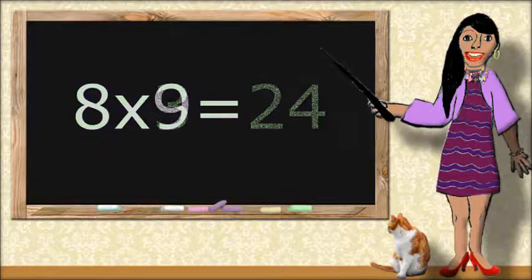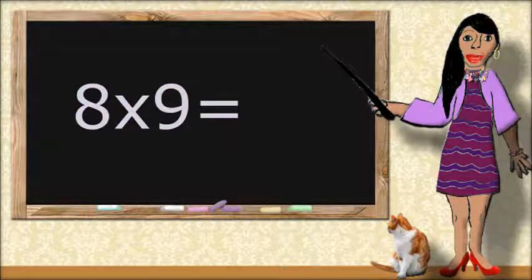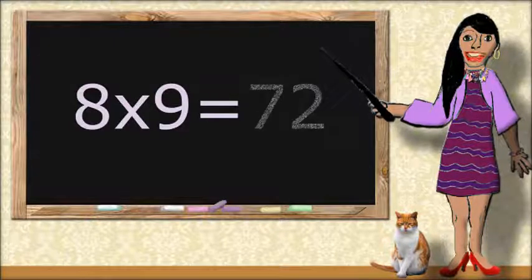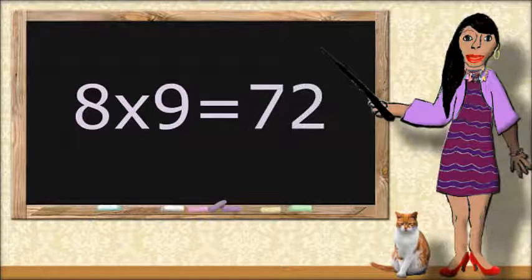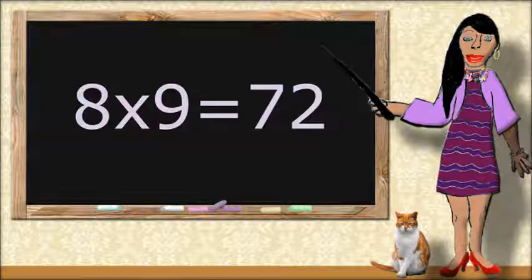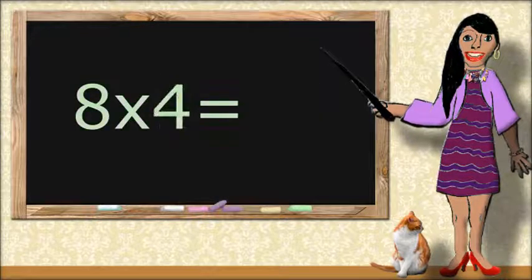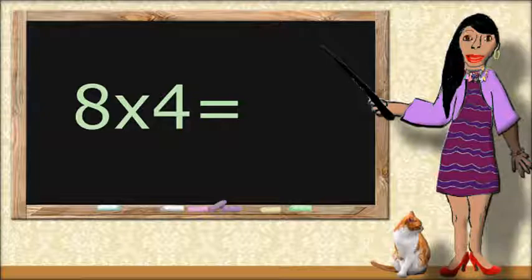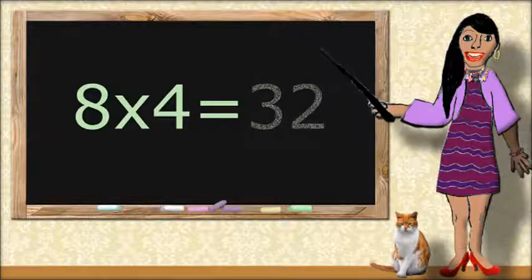8 times 9 equals... 72. 8 times 4 equals... 32.